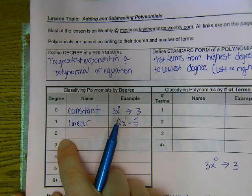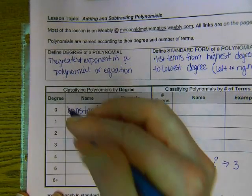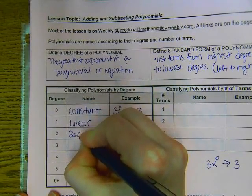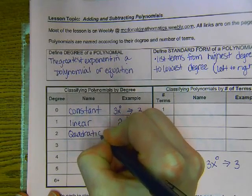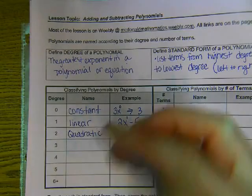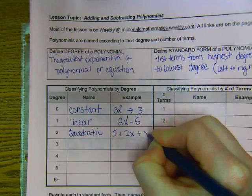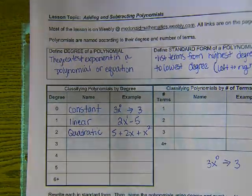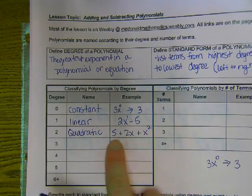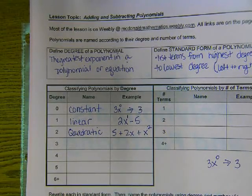When we had things with degree two, we studied these last semester. We had a name for them. I'll give you a hint. Good. They are called quadratic. And so this would be something where the highest degree is two. So maybe I would say five plus two x plus x squared. If I'm going through, I have three terms here. This one has the biggest degree and it's two. So we say it's quadratic then.